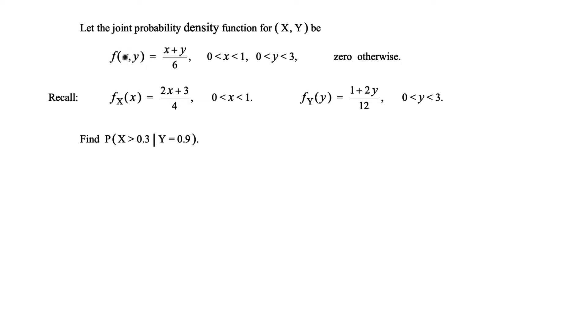Basically we're given a joint probability density function or joint pdf of x and y, and then we're also given the marginal density or the pdf for x and the marginal density of y, and we're asked to find the probability of x conditional on y.